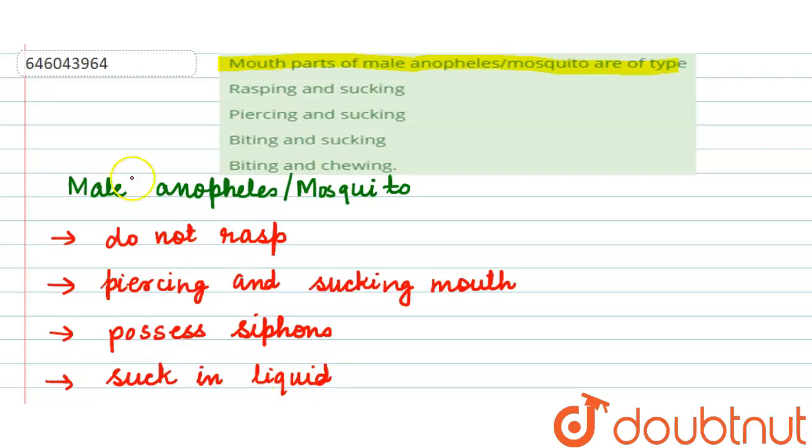So with this, if we go back to the option, we can say that mouth parts of male Anopheles or mosquito are of piercing and sucking type. That makes option 2 as the correct option, whereas the remaining 3 are wrong options and why these are the wrong options, we discussed that as well.